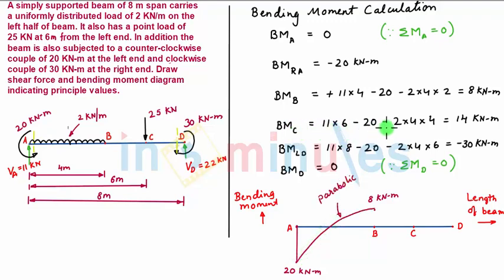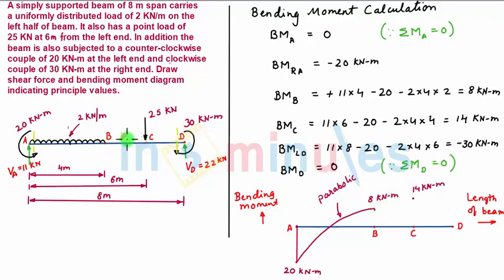Moving towards point C, bending moment at C is plus 14 kilonewton meter, so we plot this above point C. Looking at the load diagram, there is no load between point B and C, so the variation of bending moment is linear. We connect these two points with an inclined straight line.